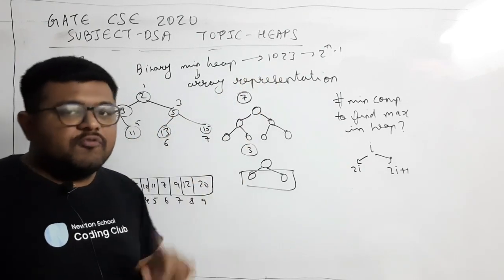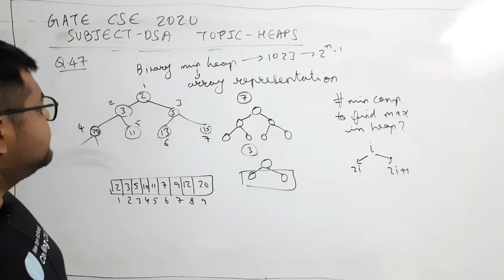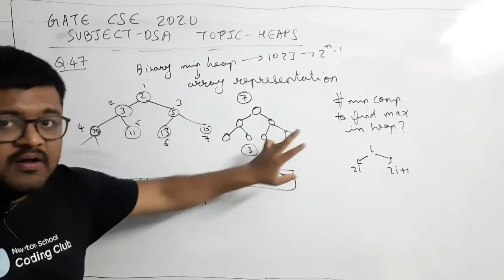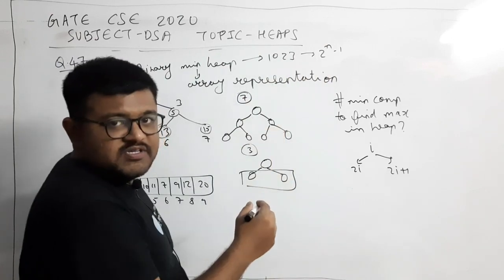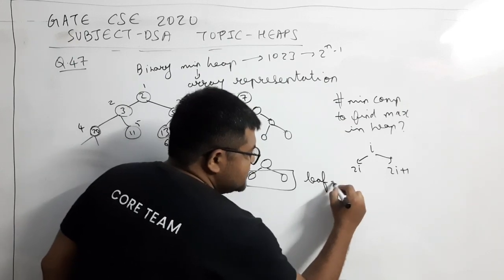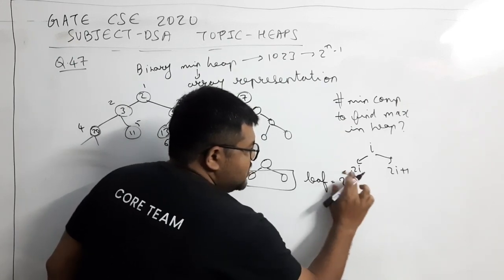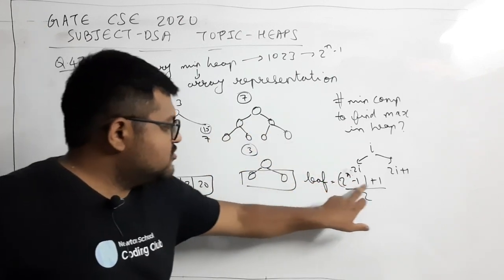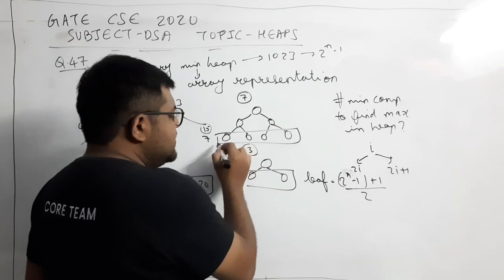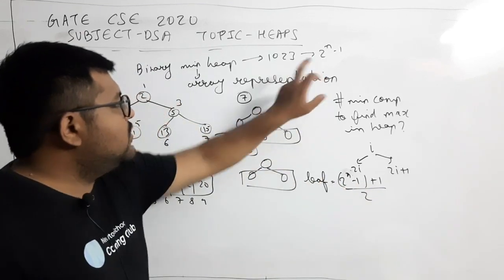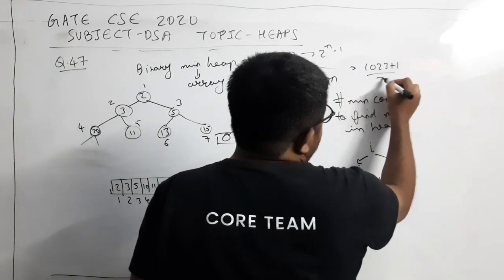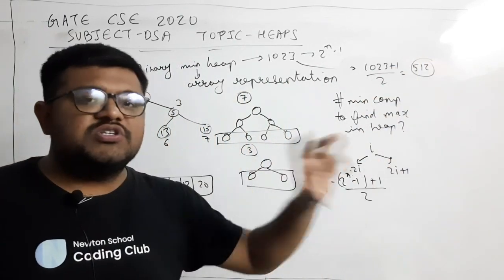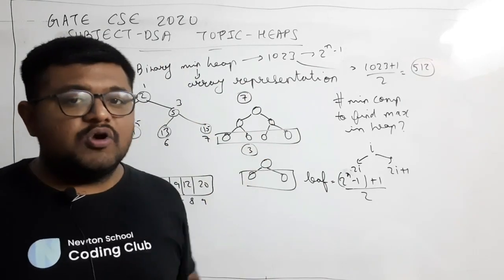So in a heap of size 1023, how many leaf nodes will there be? Now if we need to calculate how many leaf nodes will be in 1023, look: in 3 nodes how many leaves were there? 2. In 7 how many leaves were there? 4. So I can say for values like 2 to the power n minus 1, number of leaf nodes is (2^n - 1 + 1) / 2. Like this is 2^n - 1 which is 7, so (7 + 1) / 2, that is 8 / 2 = 4. Here there are 4 leaf nodes. Similarly, (3 + 1) / 2 = 4 / 2. Here there are 2 leaf nodes. So in this, how many leaf nodes will there be? (1023 + 1) / 2, that is 1024 / 2, that is 512 leaf nodes. This means 512 positions where the maximum element of the array, maximum element of the heap, can be.